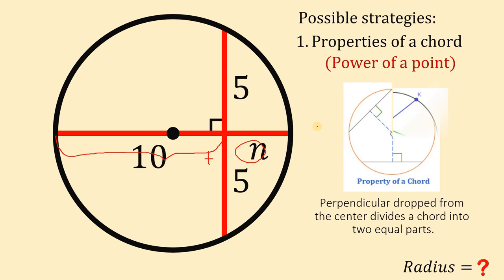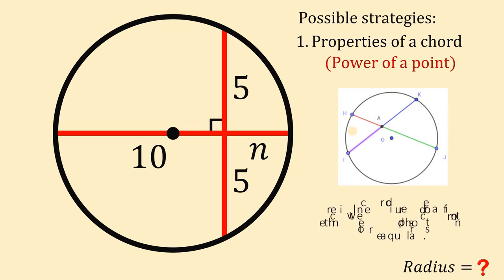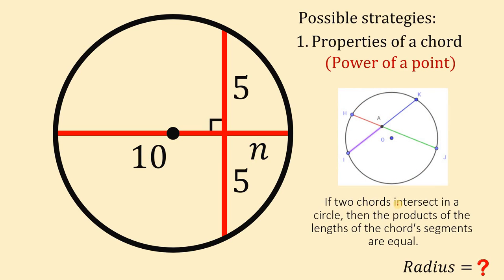Now at this point, we will use the power of a point. This is also called the chord chord power theorem. It says that if 2 chords intersect in a circle, then the product of the lengths of the chord's segments are equal. So we can say that 10 multiplied by N must be equal to 5 multiplied by 5.